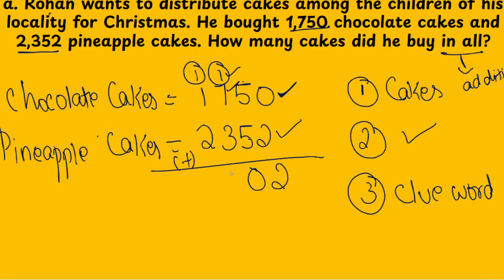One plus one is two, two plus two is four. So the total is four thousand one hundred and two. That is how you find the answer for word problems.